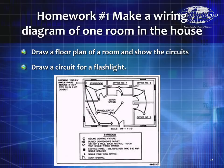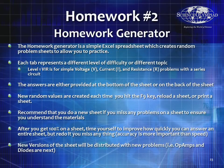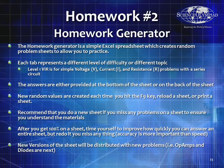For homework number one, make a wiring diagram of one room in your house — pick a room that has a switch, a bunch of outlets, some lights, maybe a fan, etc. — and figure out how the current flows. Also do the same thing for a flashlight. The other homework is to use the homework generator found in the Dropbox. It's a simple Excel spreadsheet that creates a random problem sheet for practice. Each tab represents a different level of difficulty or topic. For this first one, do Level 1 VIR — simple voltage, current, and resistance problems in a series circuit. Answers are provided at the bottom or back of the sheet. Press F9 to reload and generate a new set of randomly generated values.